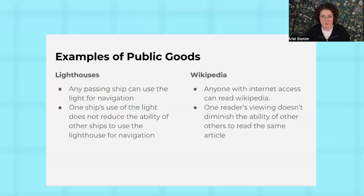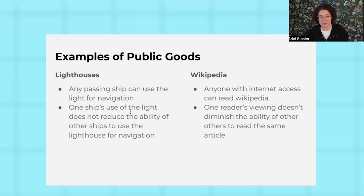We give you some examples. In addition to asteroid defense, you might think of lighthouses and Wikipedia as public goods, and we give more detail on those examples. You'll notice the lighthouse made it into our logo for this unit plan — it's a historic example. Any ship can use it for navigation, but one ship's use of the lighthouse doesn't reduce someone else's. Coase has a great paper, if you want to check it out, on the private provision of lighthouses in Great Britain.